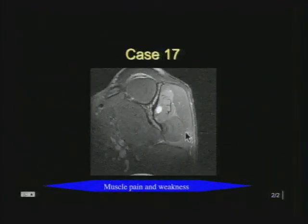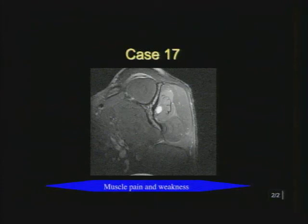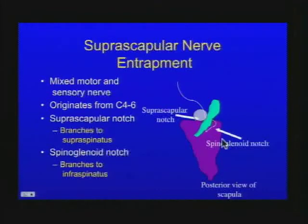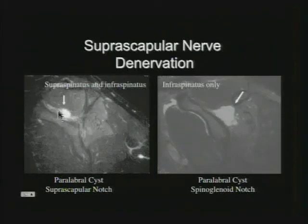Cysts around the glenoid and scapula usually mean a glenoid labral tear, but also suggest possible denervation — you'll see abnormal signal in the muscle. A tear involving the suprascapular notch, usually a SLAP lesion, may produce a cyst affecting the suprascapular nerve, knocking out supraspinatus and infraspinatus innervation. A tear in the back of the shoulder may go into the spinoglenoid notch, affecting only the infraspinatus. High cysts affect both muscles; lower cysts at the spinoglenoid notch affect only the infraspinatus, presenting with edema-like pattern early and atrophy with fatty infiltration later.